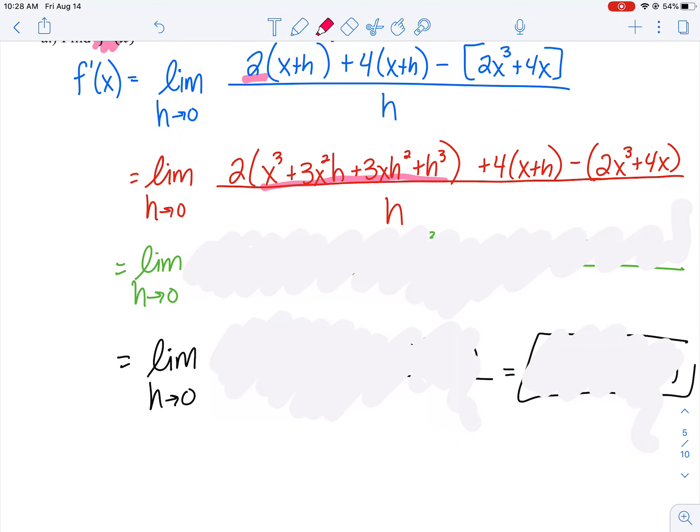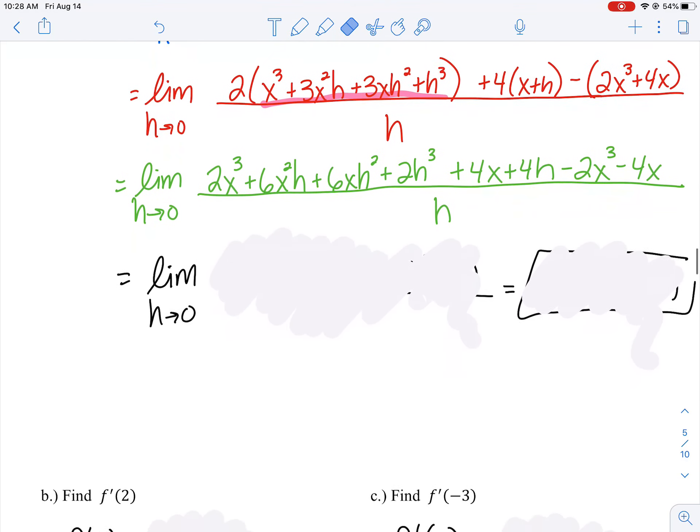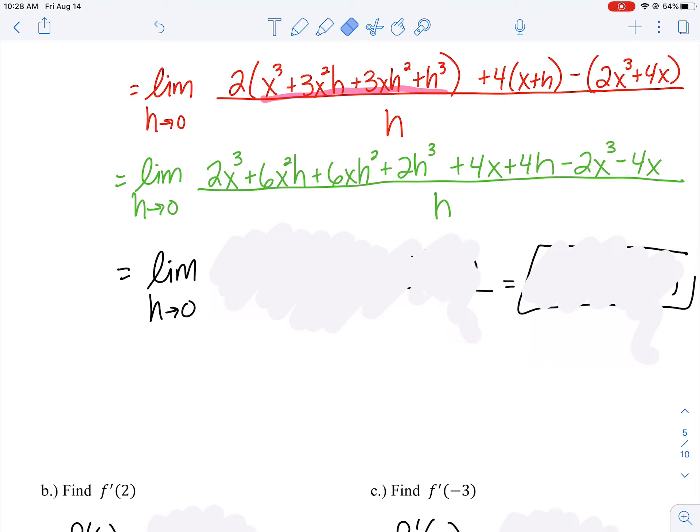Let's distribute the 2, distribute the 4, and distribute the negative. After distributing all those values, you should have all the same terms I do. Pause your video and double-check that you have everything in my numerator.